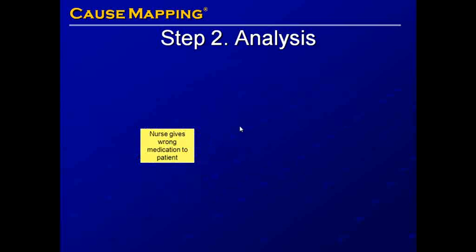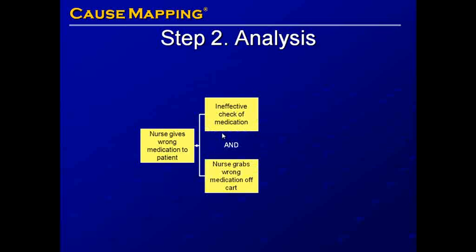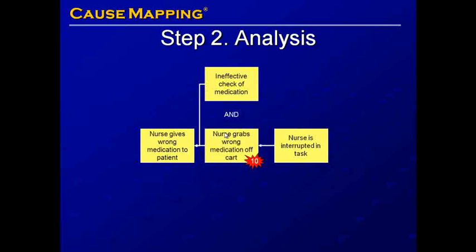A nurse may give the wrong medication because of an ineffective check of medication — if it results in the patient getting the incorrect medication, then we know that check was ineffective. In addition, the nurse may grab the wrong medication off the cart, which is an error at step 10 in the process, potentially because the nurse is interrupted, or the nurse may be given the wrong medication from the pharmacy.